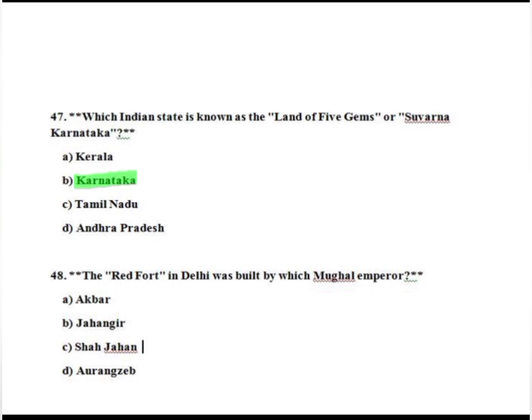The Red Fort in Delhi was built by which Mughal Emperor? Option A: Akbar. Option B: Jahangir. Option C: Shah Jahan. Option D: Aurangzeb. The correct answer is Option C, Shah Jahan.